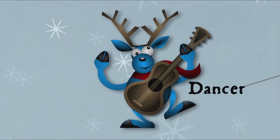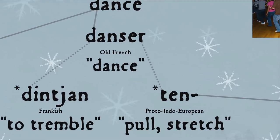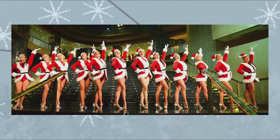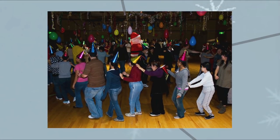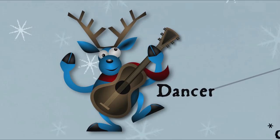Next up is Dancer. The etymology of dance is a bit uncertain. The word comes into English from Old French dancer, and ultimately either comes from Frankish dintjan meaning to tremble, or from the Proto-Indo-European root ten meaning to pull or stretch, suggesting dancing in a line or file. The word carol, possibly coming from Latin corolla meaning little crown, originally referred to a kind of circle dance performed to a particular type of lyric song, so maybe Dancer was also a singer.